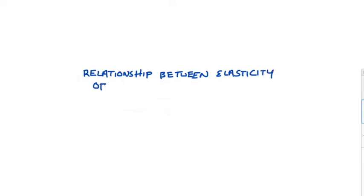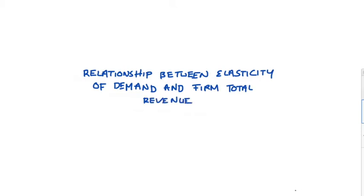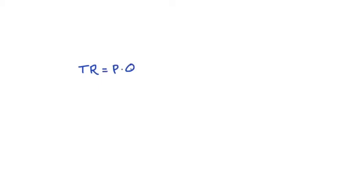Hi guys, in this video I'm going to discuss the relationship between elasticity of demand and firm total revenue. Let's start with total revenue, which is just all of the money that the firm makes from producing some good. It's equal to the price of the good multiplied by the quantity of the good that the firm is producing.